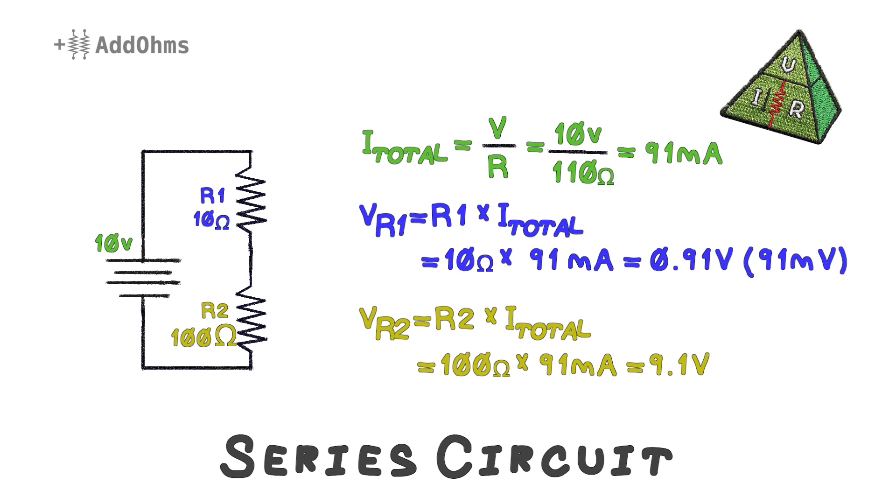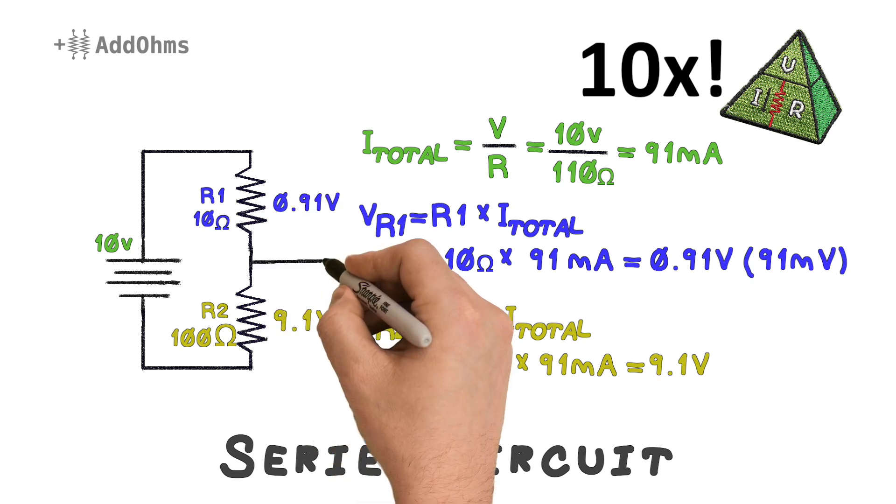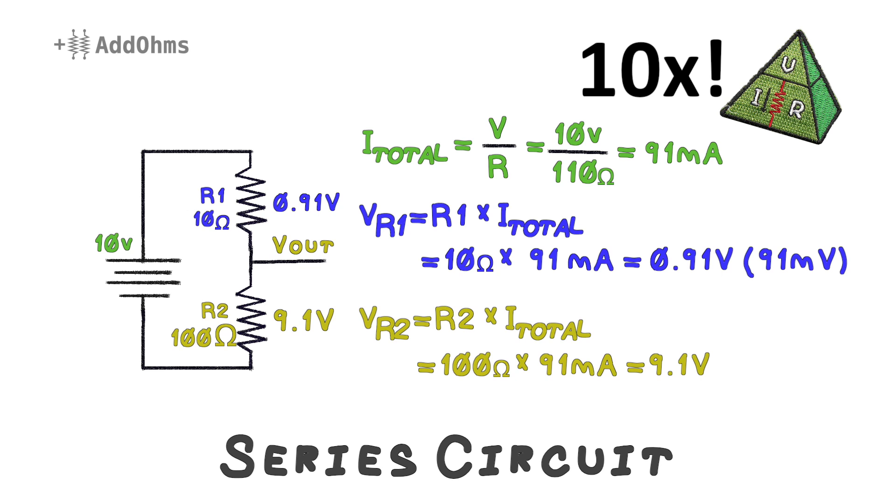So, can you see what happened? By making R2 10 times bigger than R1, the voltage drop of R2 is also 10 times bigger than R1. We effectively divided our voltage coming from the battery.